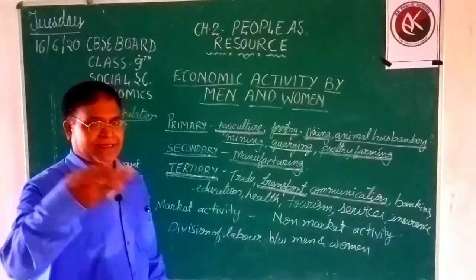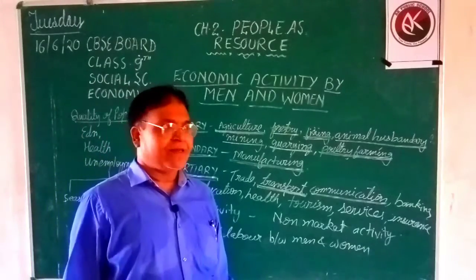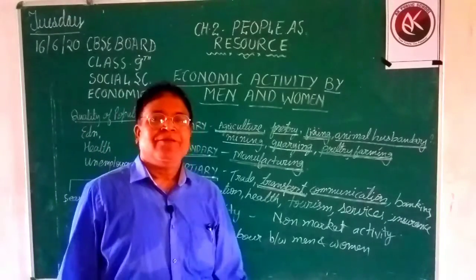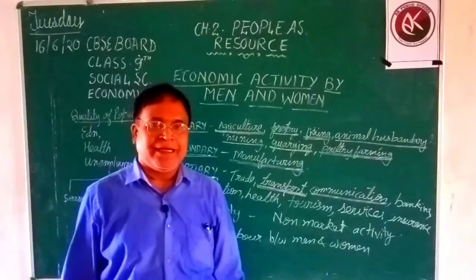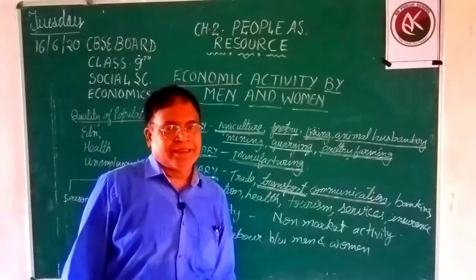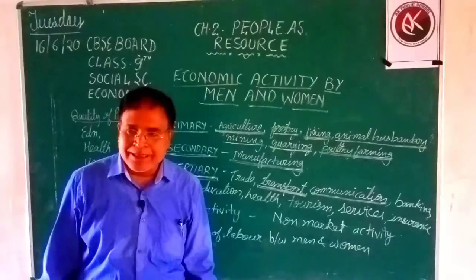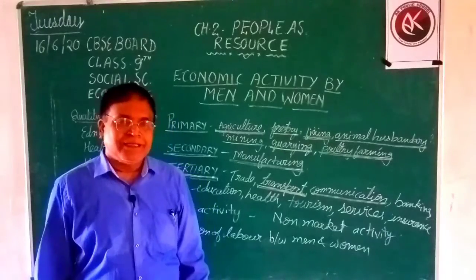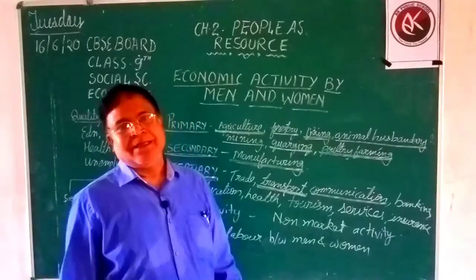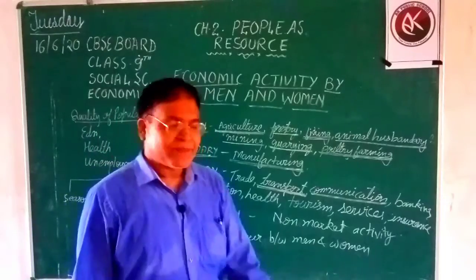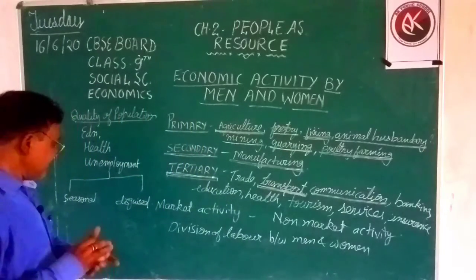Insurance is also important. The government is providing many types of insurance to farmers — crop insurance, life insurance, accidental insurance, bike insurance. Insurance is a service sector activity. That is why tertiary activities have become very important.